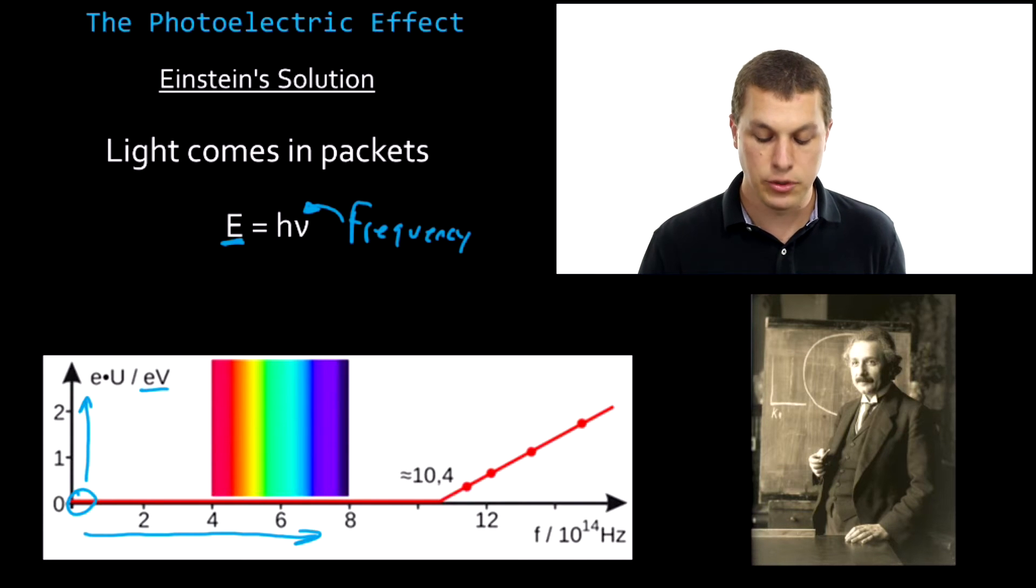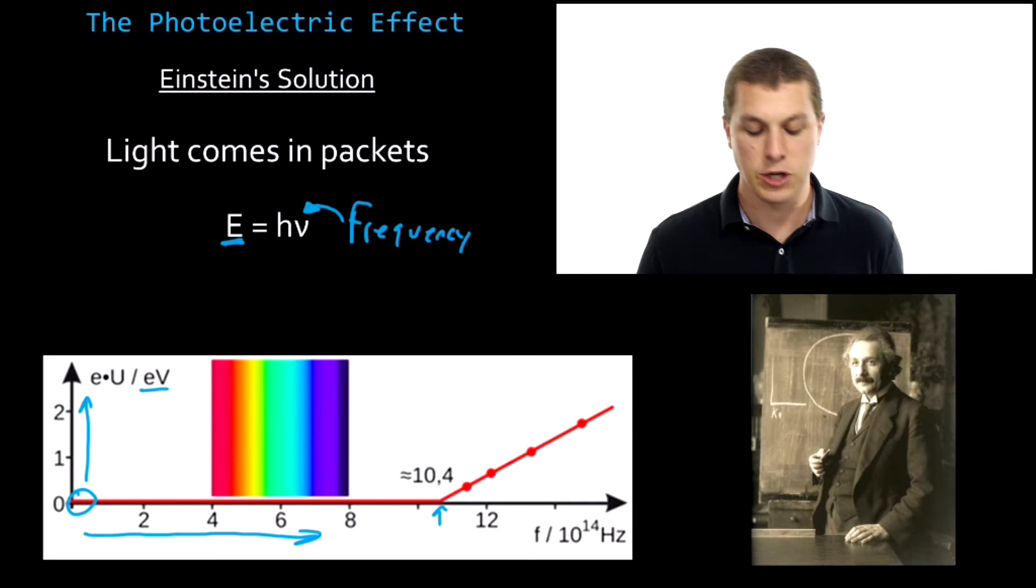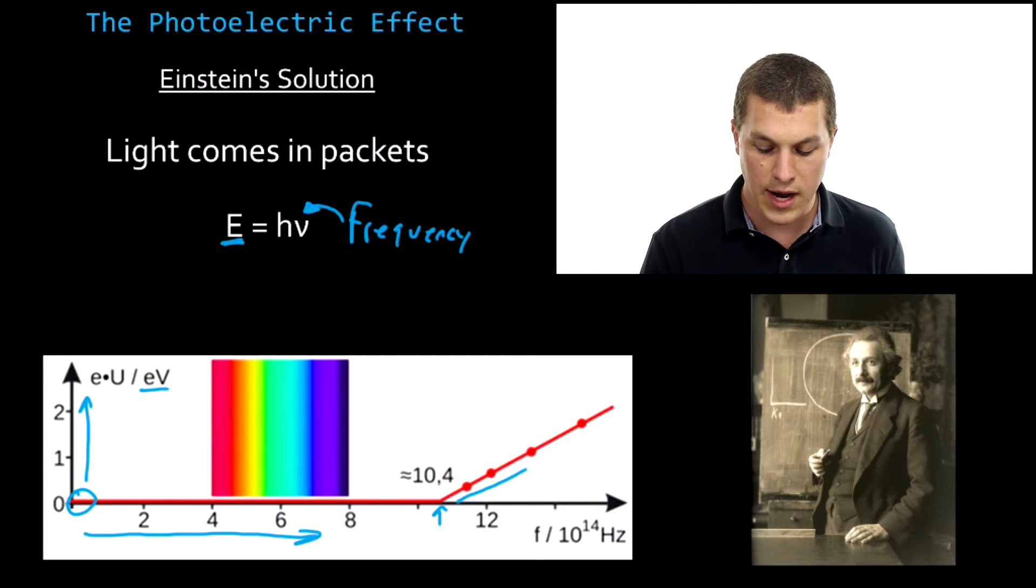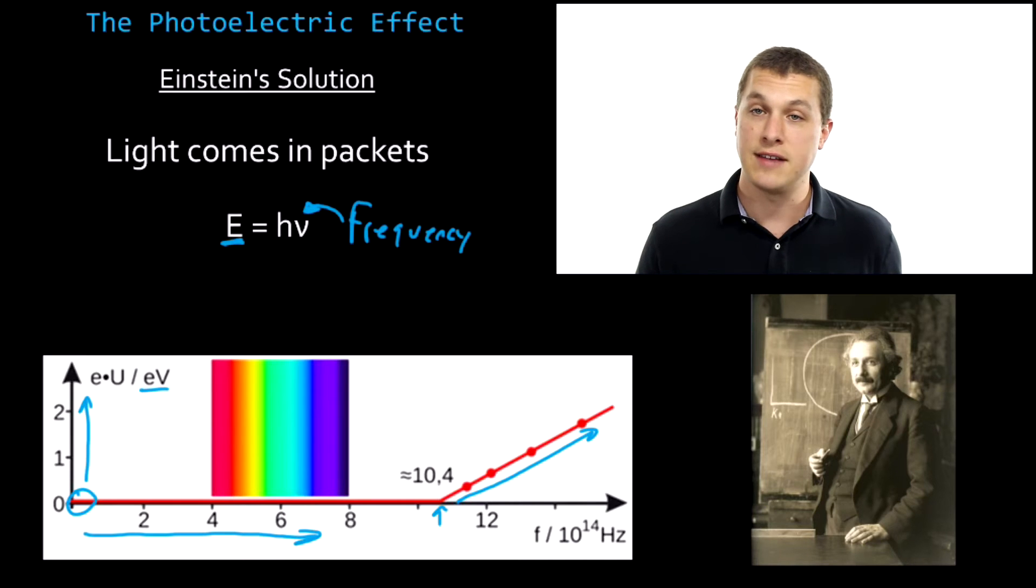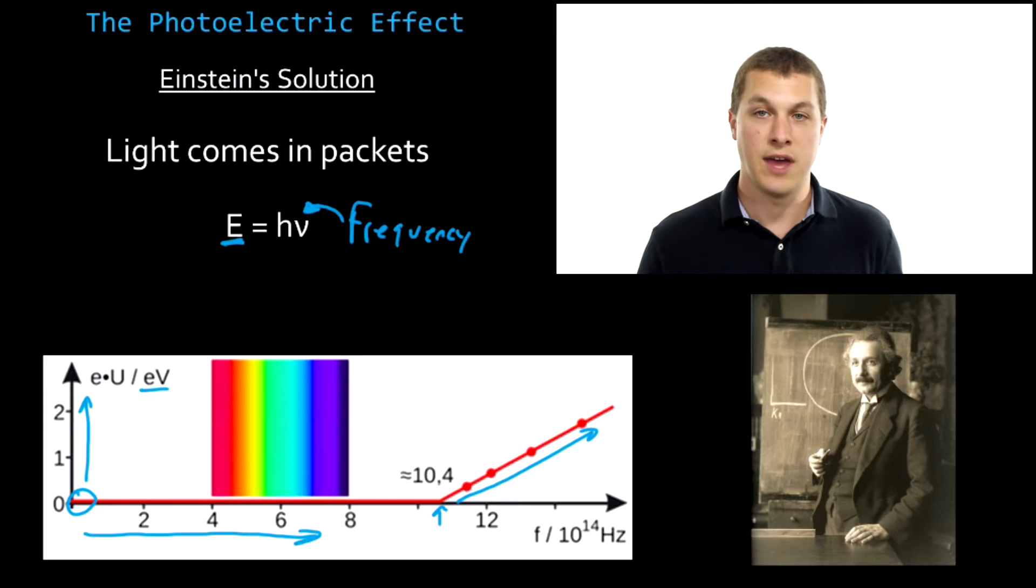And it isn't until we get to some critical frequency that we start to pop off electrons. So right there, at about 10 times 10 to the 14th Hertz, in this case, we start to pop off electrons. And that's why this line now rises. And it continues to rise as we increase frequency, just like we said on the last slide. As you increase frequency of our light, you get higher and higher energy electrons coming off. And so Einstein's explanation helps make sense of that.